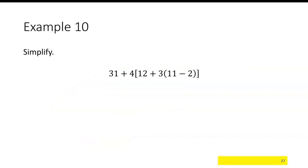All right, one last one. 31 plus 4 times 12 plus 3 times 11 minus 2. I would deal with the parentheses, start with the bracket, and inside the bracket there is this parentheses. So I would start with the 11 minus 2.